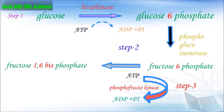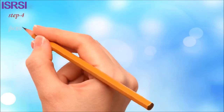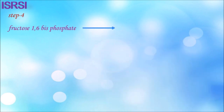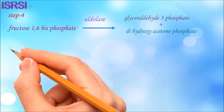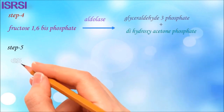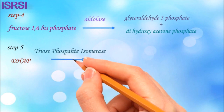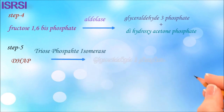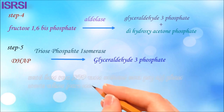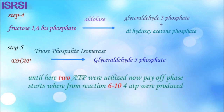In step 4 of glycolysis, fructose-1,6-bisphosphate is converted into dihydroxyacetone phosphate and glyceraldehyde-3-phosphate by the enzyme aldolase. In step 5, dihydroxyacetone phosphate is converted into glyceraldehyde-3-phosphate by the enzyme triose phosphate isomerase. Up to this point, two ATPs were utilized — this is called the expenditure phase. From here, the payoff phase starts.